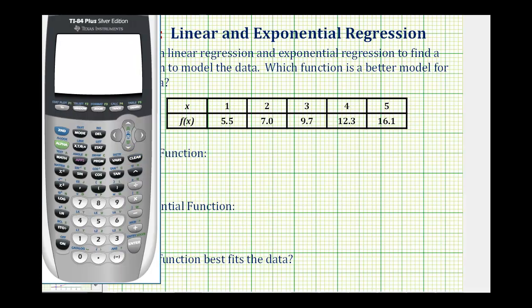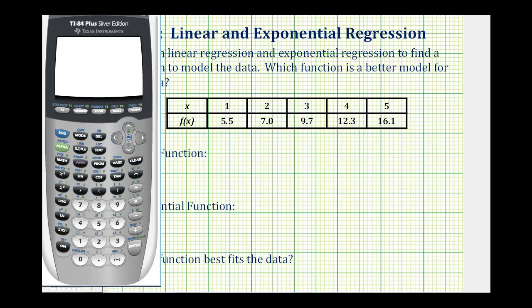The first thing we need to do is make sure we have the diagnostic feature turned on so we get the r-squared values. To do this we'll press second, zero for the catalog, and then we'll press x to the negative one, which is actually the key for D. If I press this it scrolls down to D, and now we'll press the down arrow until we see diagnostic on.